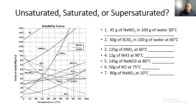Number one: 45 grams of NaNO₃ in 100 grams of water at 30 degrees Celsius. The first thing I have my students do is identify what they're given: we need the 45 grams, NaNO₃ is the solute. We cross out the 100 grams of water since we don't need it.